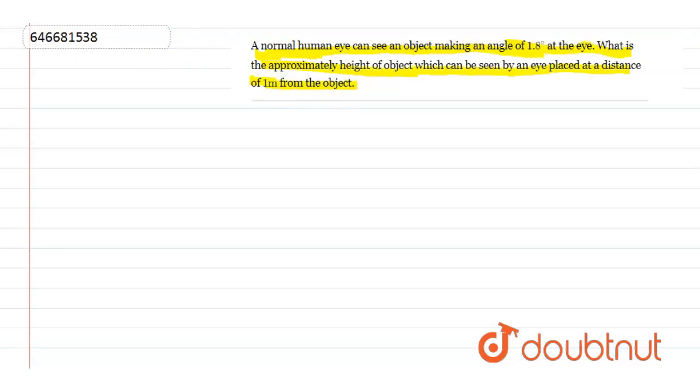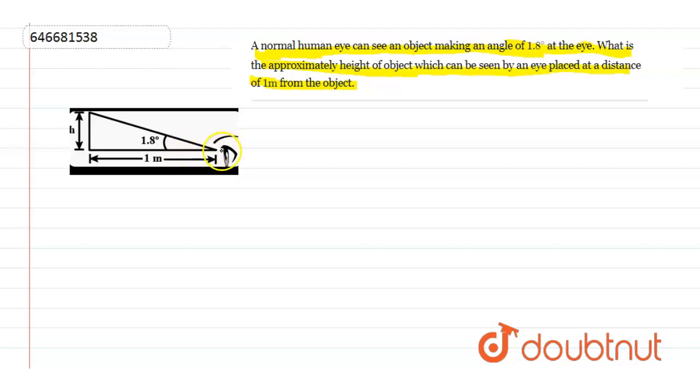Okay, so let us understand this question with the help of a graph. First, let us draw the graph. So this is our graph: this is the eye, this is the angle, this is the height of the object—assume it is h—and this is the distance. Now, as we know, if theta is very small, we can write tan theta is approximately equal to theta.